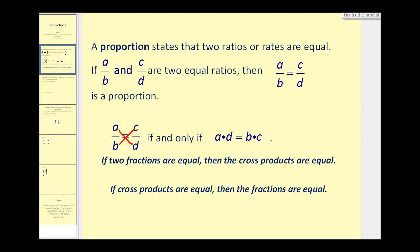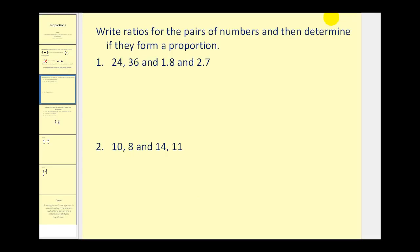Let's take a look at an example. We want to write ratios for the pairs of numbers and then determine if they form a proportion. So for number one, the first ratio would be 24 to 36 and the second ratio would be 1.8 to 2.7. If these are equal and form a proportion, then their cross products must be equal.